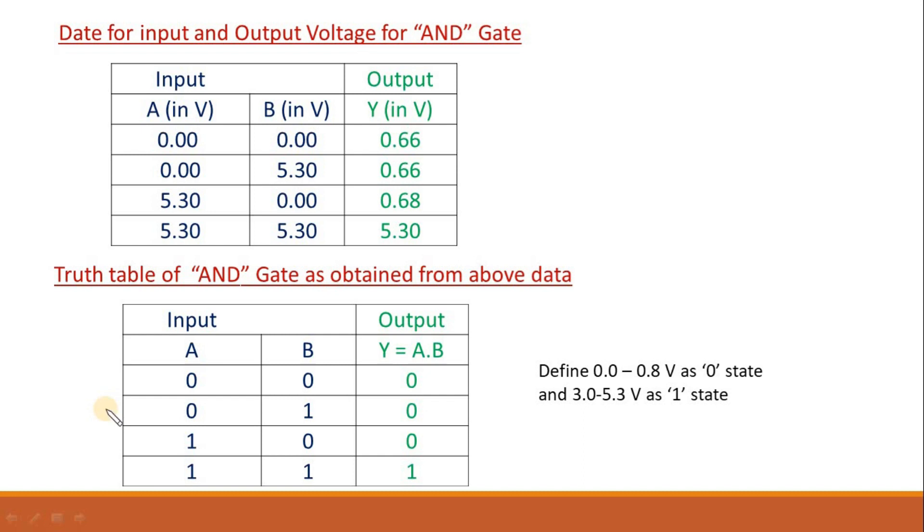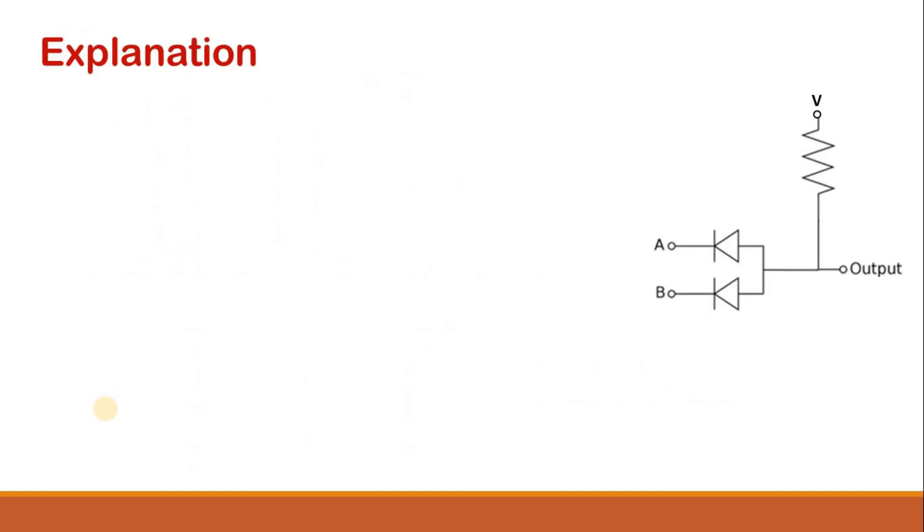Let me try to explain the circuit. This is the circuit diagram for an AND gate which we have constructed. Here V voltage is the high voltage, that is 5.3 volt which we are using in this experiment.